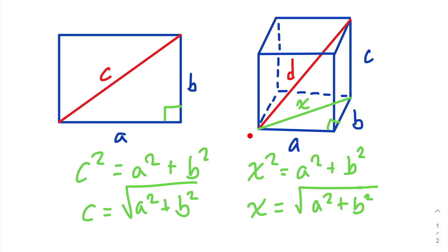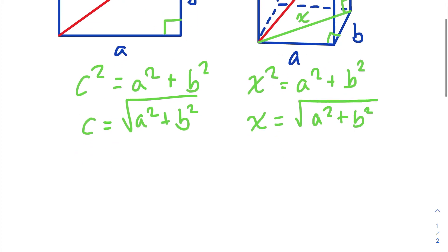Now when we drew the diagonal with length X, we didn't only create one right triangle, we created two. This right here is also a right triangle because in a rectangular prism, all these corners are right angles. So this is a right angle, which means that we have a right triangle right here. So we can find D in terms of X and C. D squared is equal to X squared plus C squared because of the Pythagorean theorem.